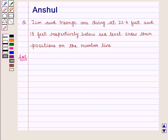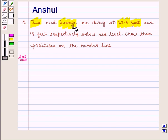Let us proceed to the solution. In this question, we are given that Jim is diving at 22.6 feet below sea level and George is diving at 18 feet below sea level.